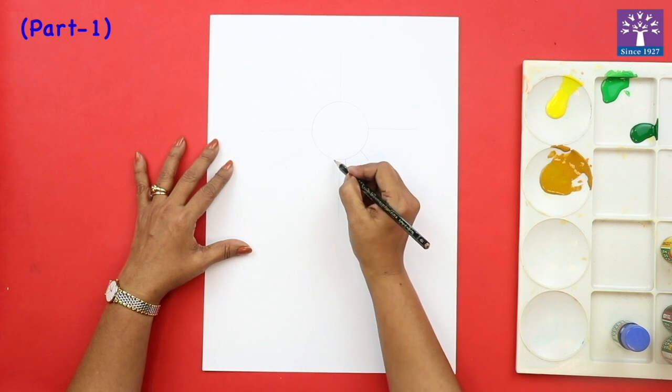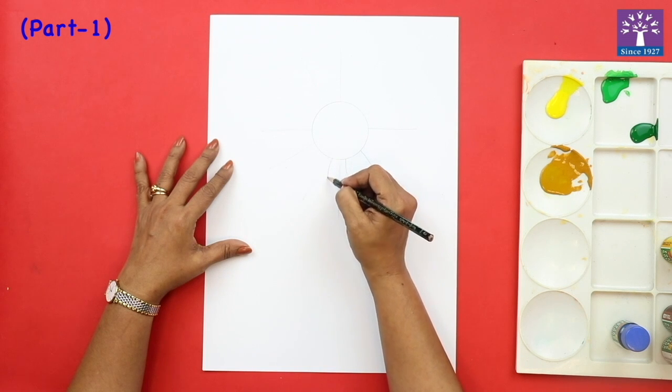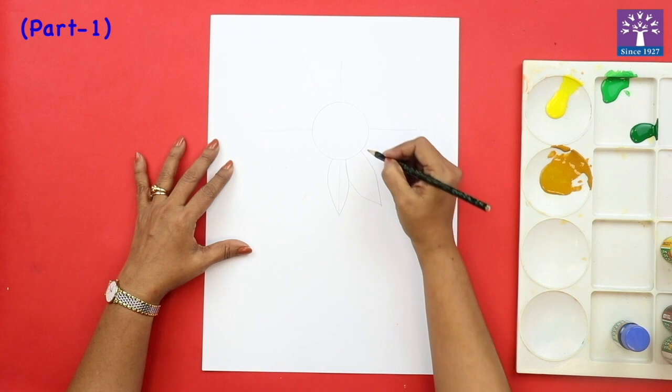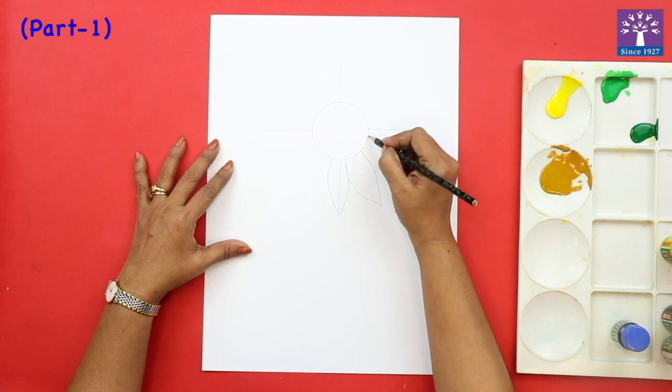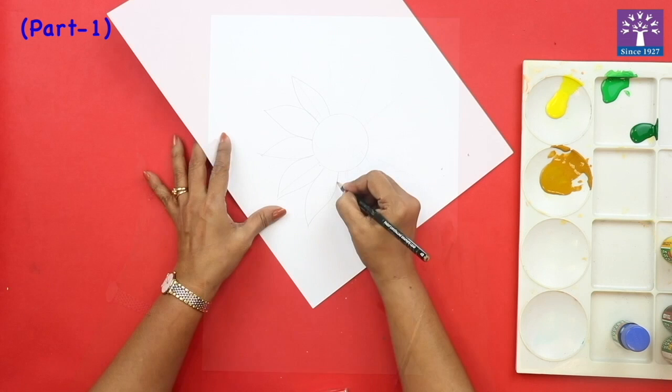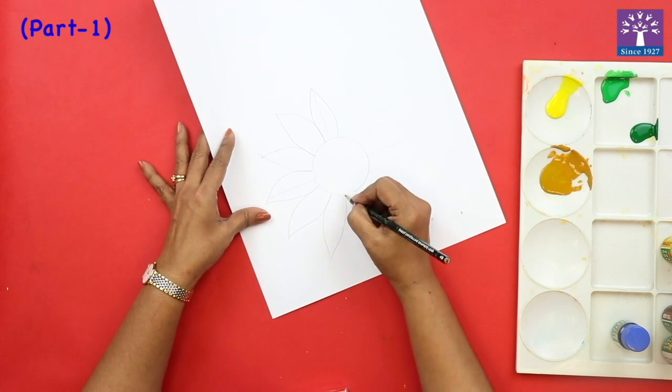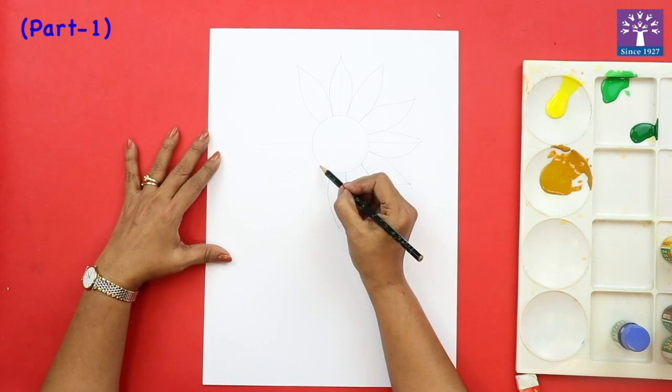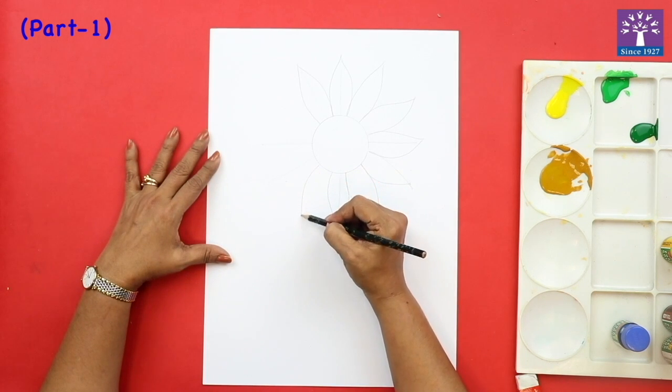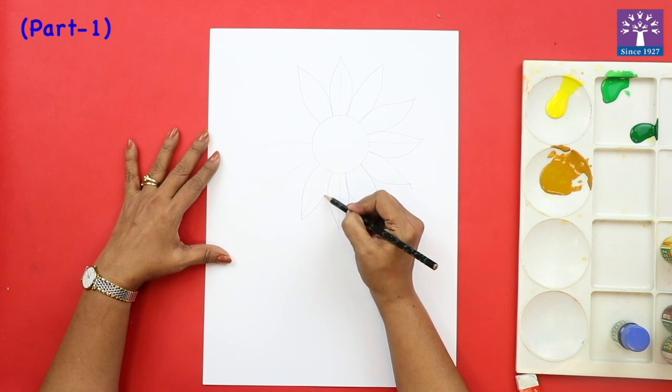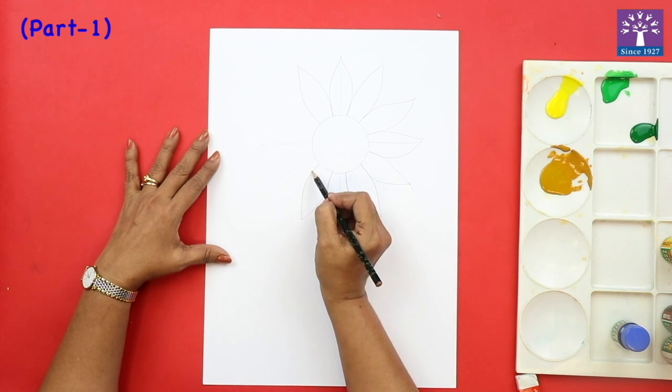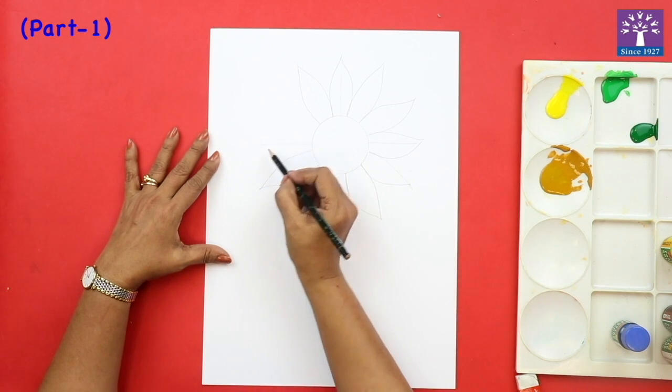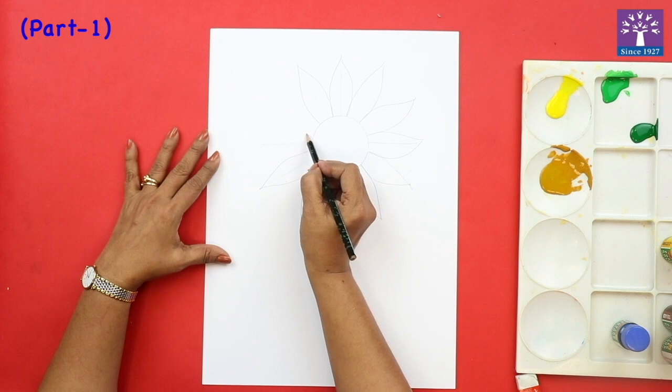Like this. As you can see, we are just drawing some curved lines to make the petals. It's okay if a few of your petals are uneven. It looks a bit natural.